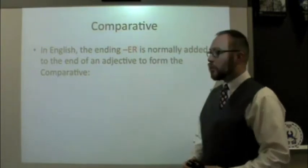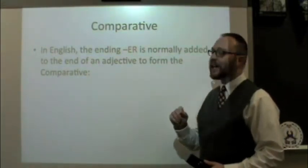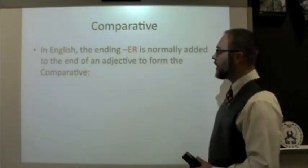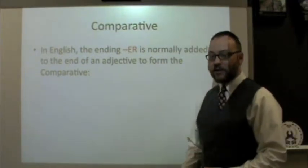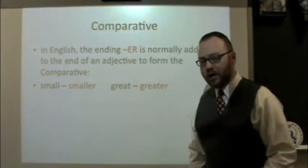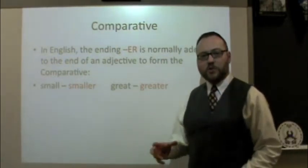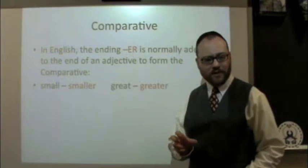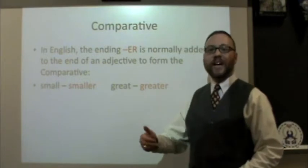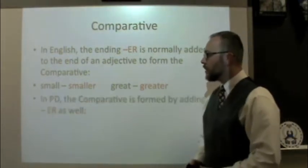In English when we use the comparative form we're usually taking an adjective and adding the ending -er to the end of it. That is what makes it the comparative. For example, small to smaller, great to greater. Comparative is because we're comparing things — it is smaller than, it is greater than.